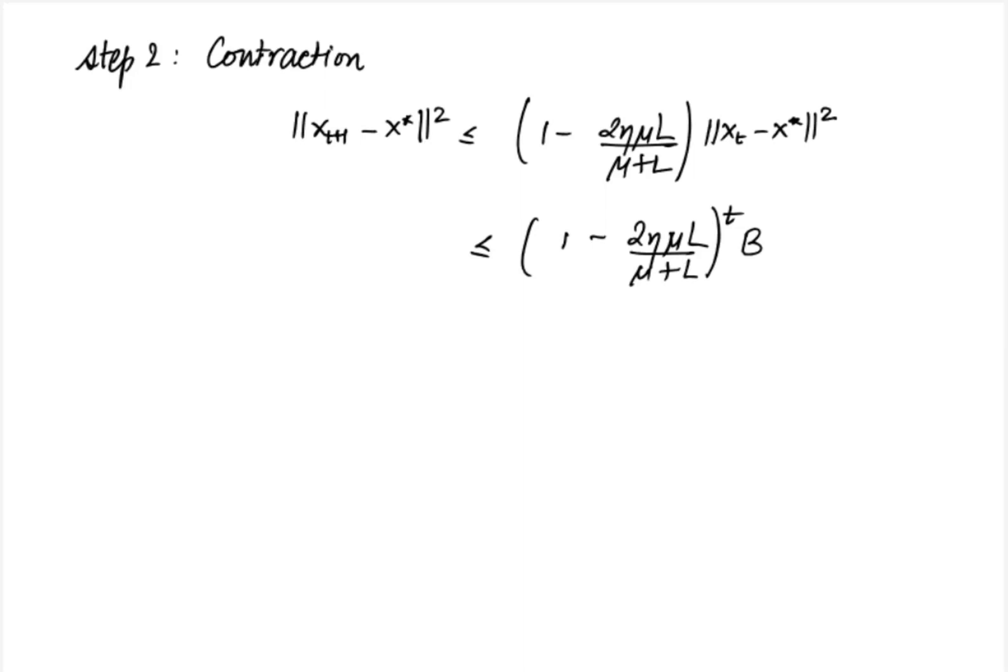As earlier in this case also we choose eta to be large, in fact as large as possible so as to minimize the contraction term. Remember that we already assumed that eta was less than 2 by mu plus l so we choose eta equal to 2 by mu plus l. And substituting it back we see that the contraction term becomes l minus mu by l plus mu whole square. Giving us the final bound x t plus 1 minus x star norm square less than equal to l minus mu by l plus mu raised to the power 2t times b.